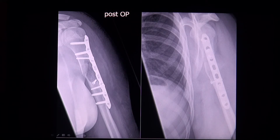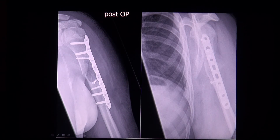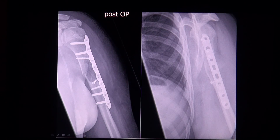Langerhans cell histiocytosis affects the same age group and is hard to differentiate in case of a non-aggressive appearance. A completely lytic enchondroma without cartilaginous matrix also can't be differentiated from a simple bone cyst radiographically. Brown tumours are high on the differential diagnosis list if other signs of hyperparathyroidism are present, like subperiosteal and subchondral bone resorption or decreased bone density.